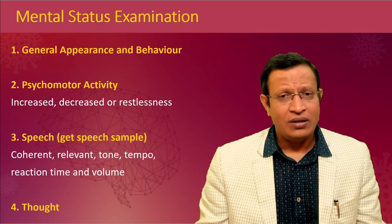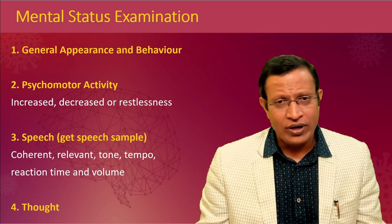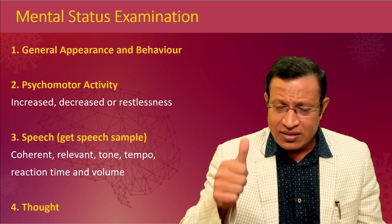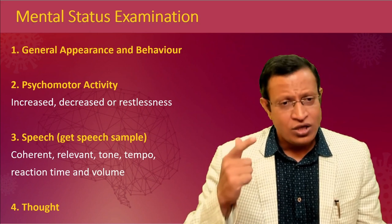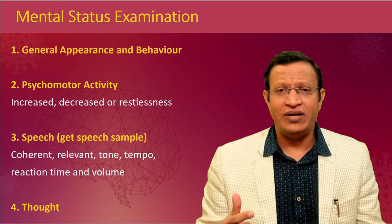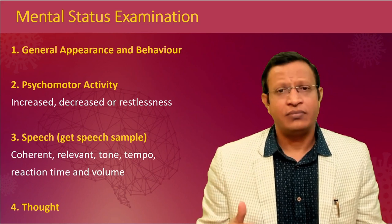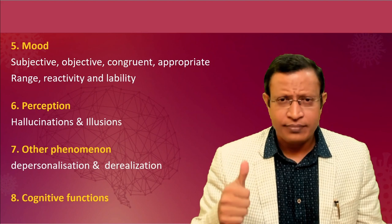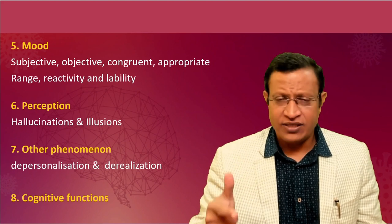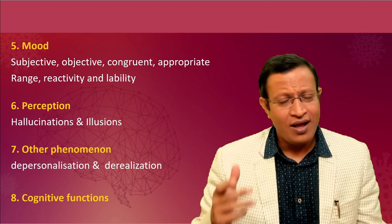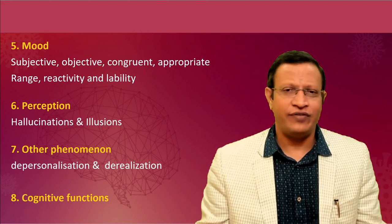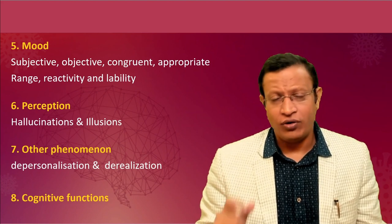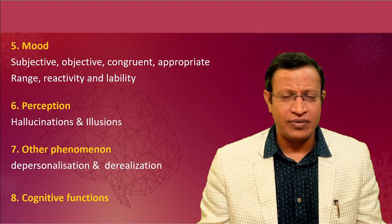In mental status examination, there are eight important variables to examine: general appearance and behavior, psychomotor activity, speech, thought, mood, perception, other phenomena, and cognitive functions. This should be tailored to the cognitive ability of the child. In younger children, you should not ask complex questions — it becomes useless. The MSE should be related to the cognitive ability of the child.